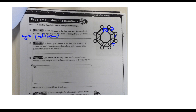And how many are there? Let's count: one, two, three, four, five, six, seven, eight — so there are eight of them.